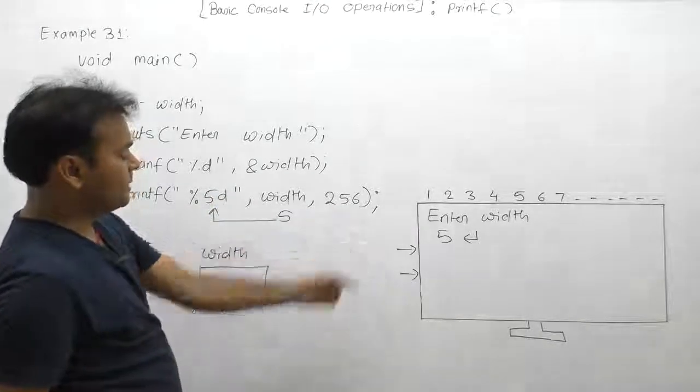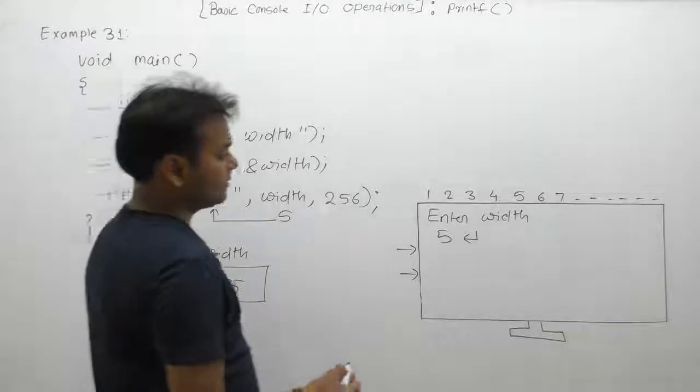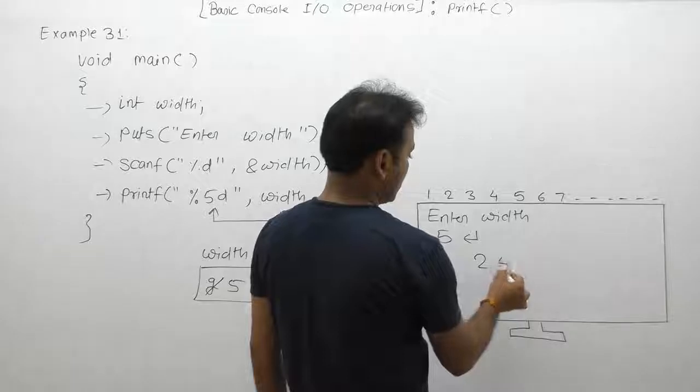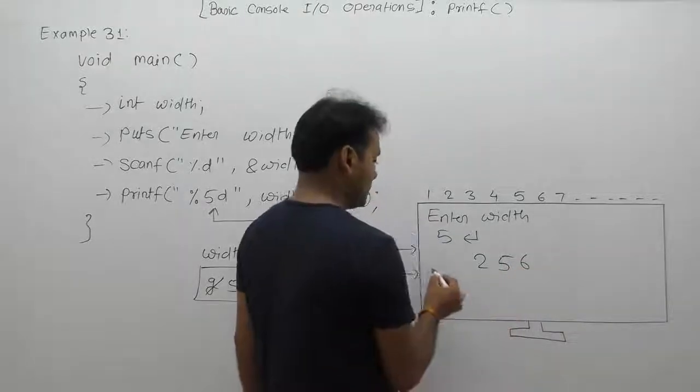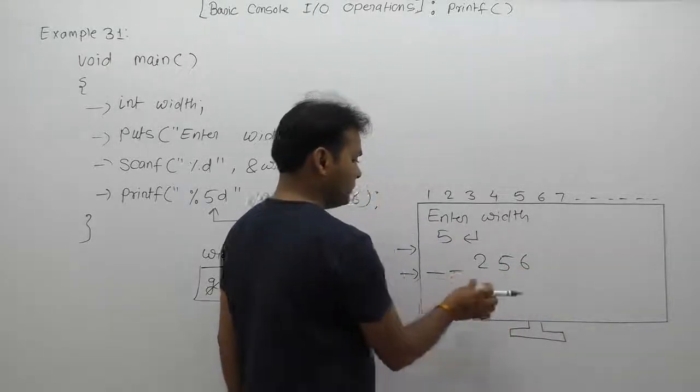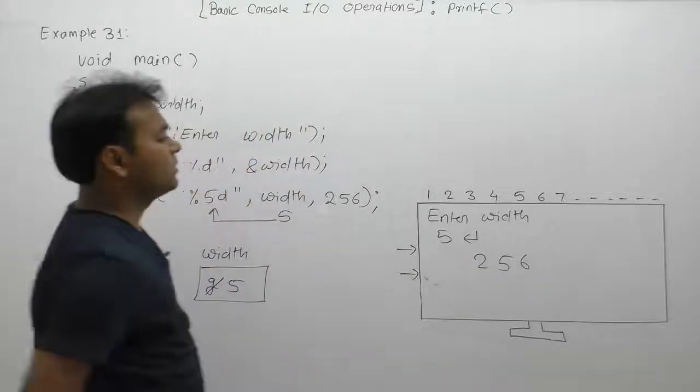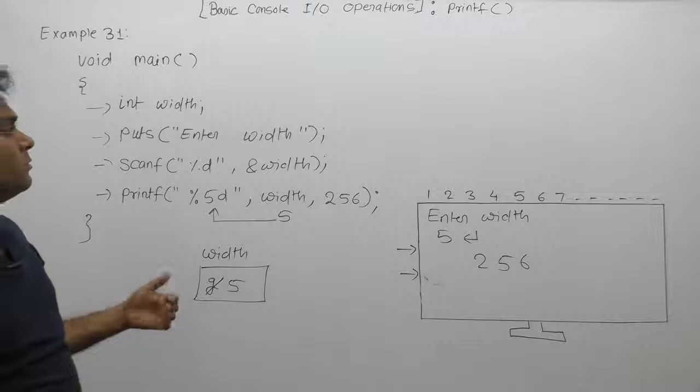Then the displayed number is 256. 256's value is displayed as 256 in the form of 5 bits. Therefore, here two spaces are filled before displaying this value. This is the output in that case. Suppose if we are executing the same application a second time.